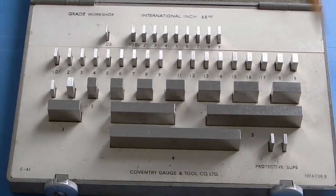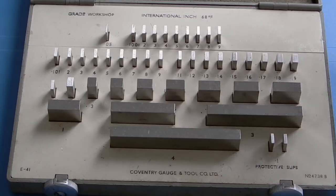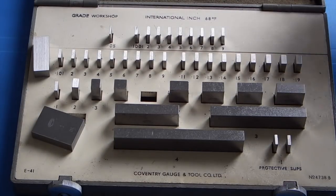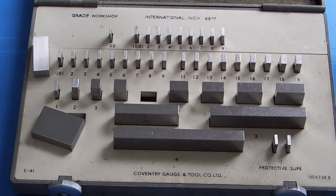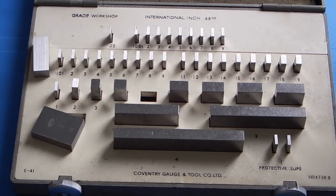The protective slips are to put on the end of your build of blocks to reduce the wear to the set. There are different size sets you can get like a half set, and you can get sets that have got more blocks in than this, but this is just a basic set.